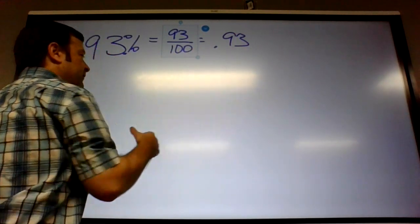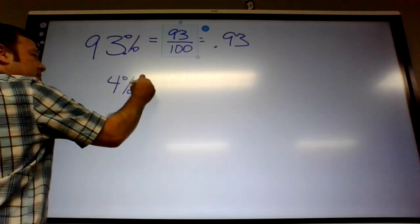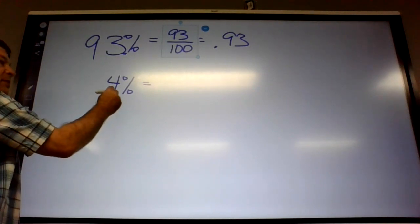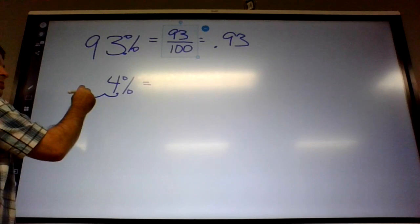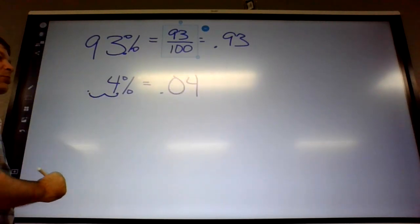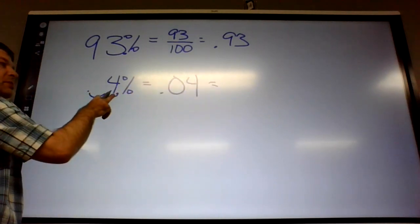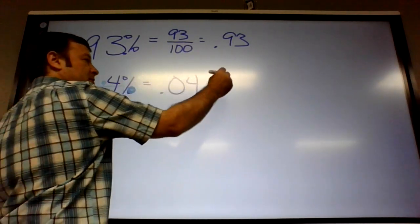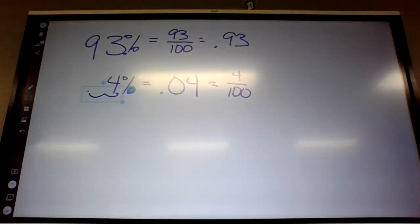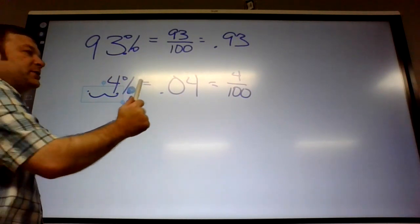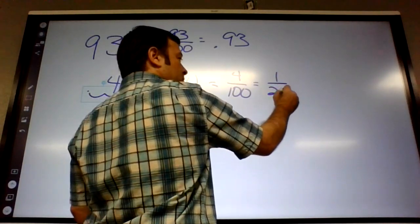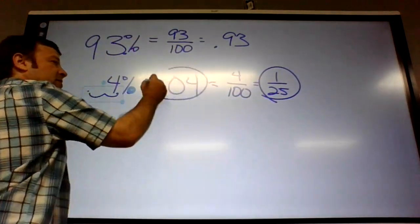So if I had like 4%, what would that be as a decimal? 1, 2, so it would be 0.04. And what's it as a fraction? 4 over 100. Percent means out of 100, so you just put it over 100. But if the fraction reduces, just like always, you need to reduce it, divide those by 4, and you get 1 over 25. So that's the fraction, that's the decimal.